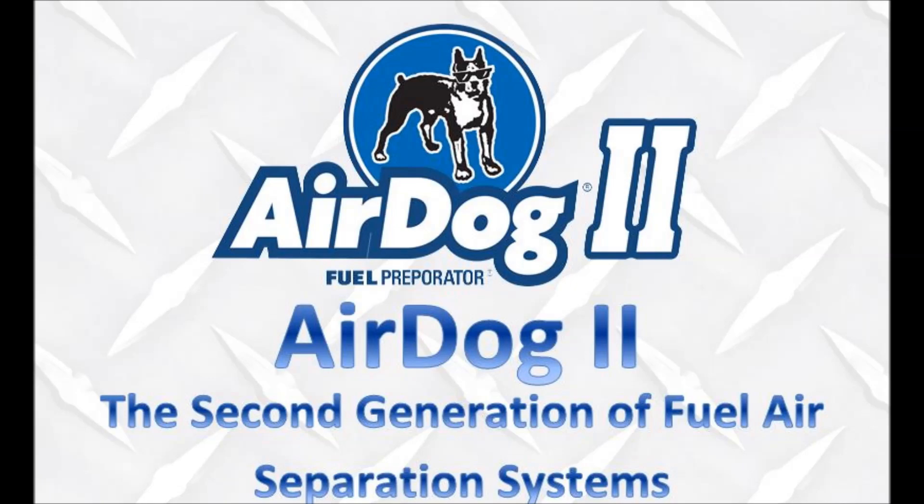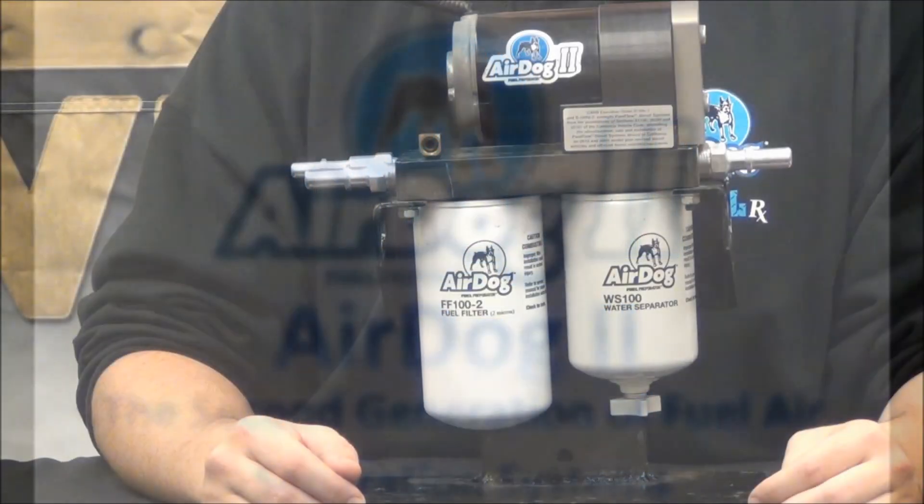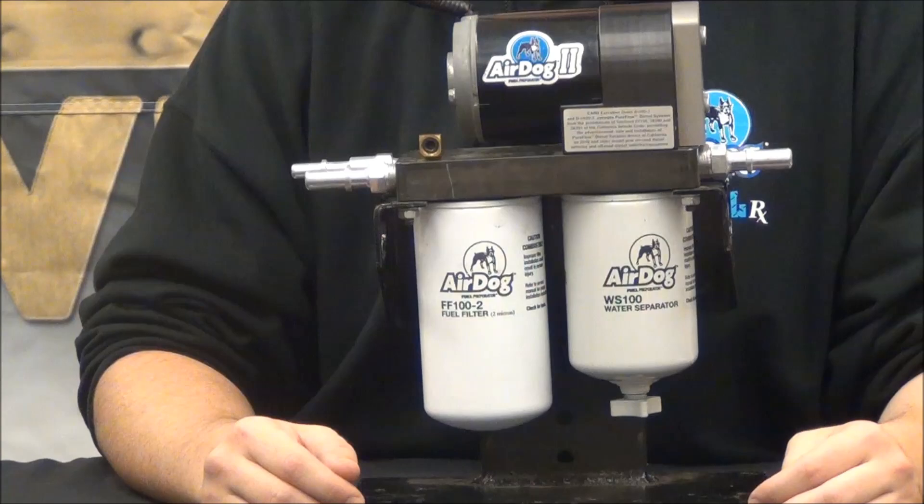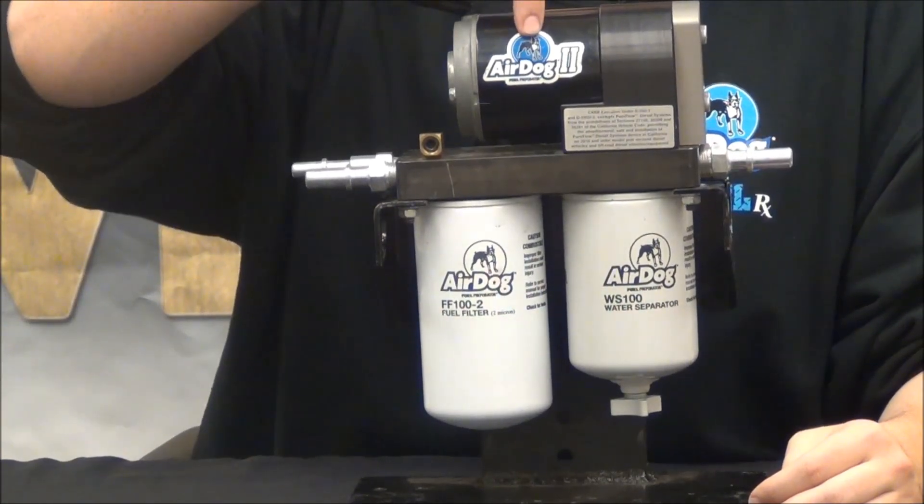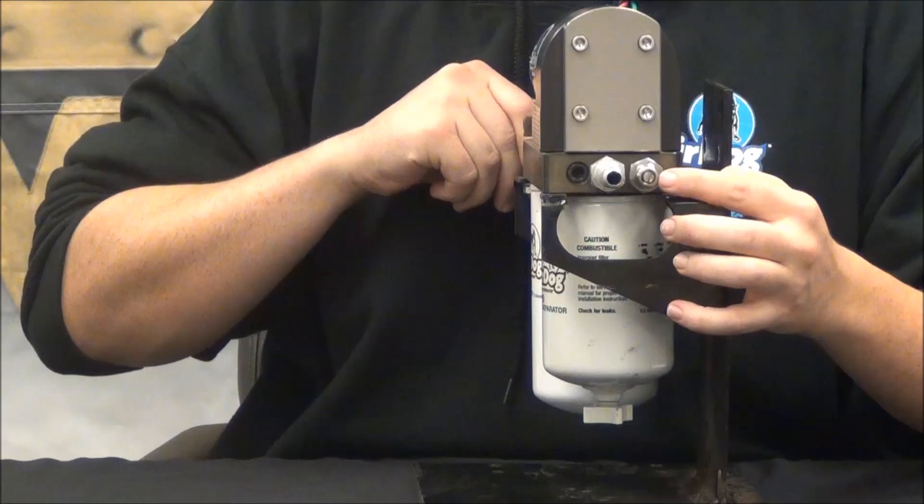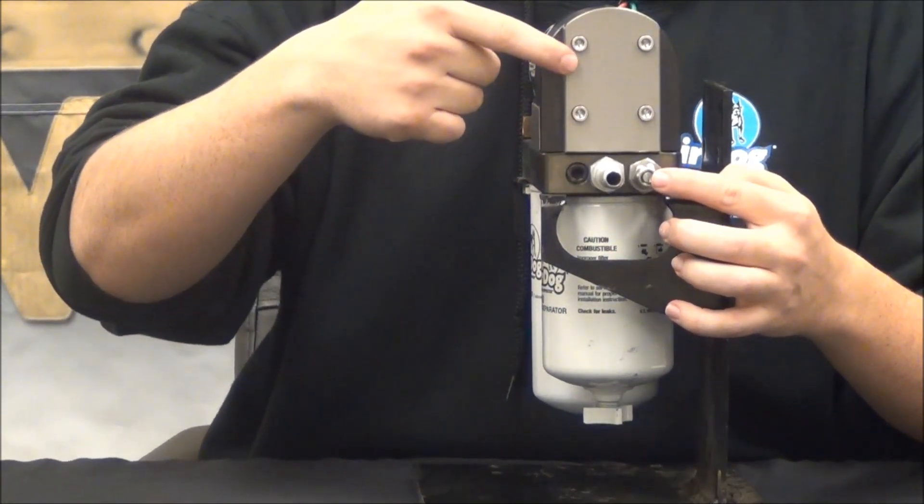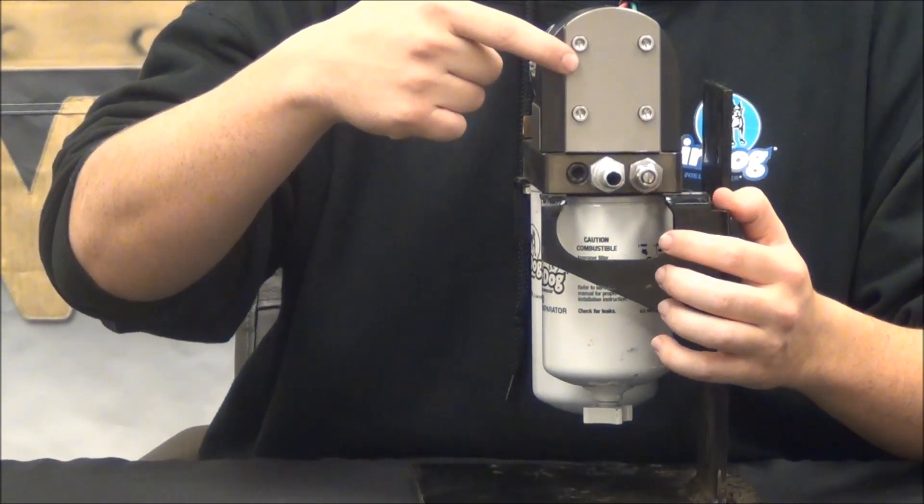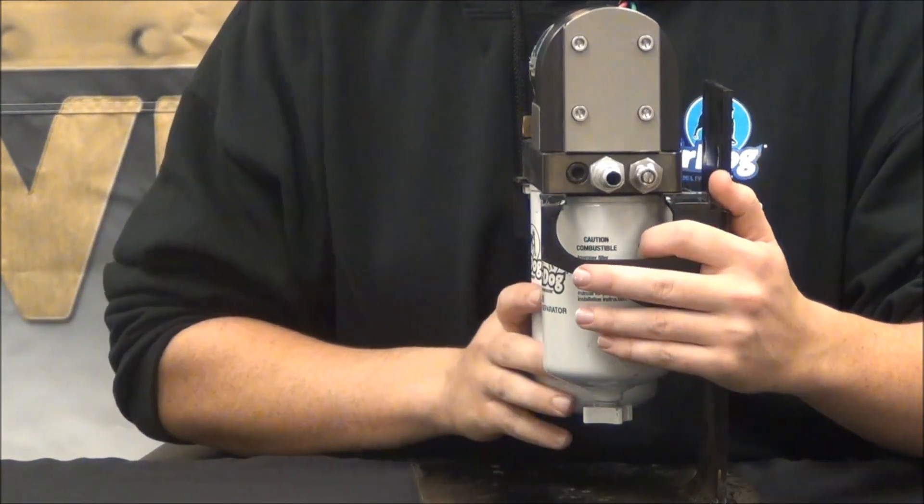Now we will talk about the AirDog 2. Next, I want to share the features of the AirDog 2. This pump features an adjustable fuel pressure regulator, a dual port gear rotor cap, also known as a tune stone cap, and a demand flow.